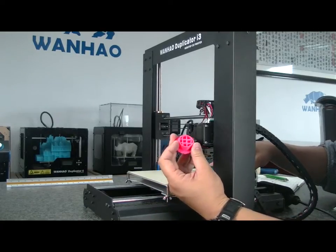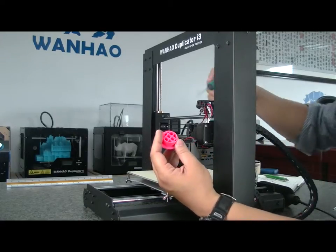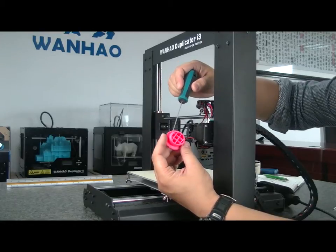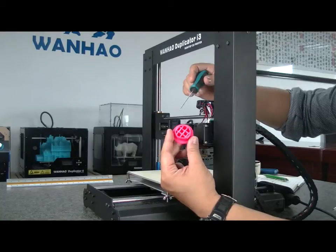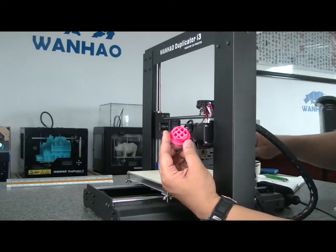Some customers find that when they print round objects, they come out oval-shaped instead. This is caused by the timing gear becoming loose.